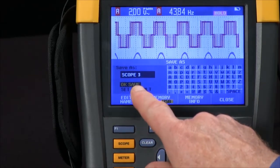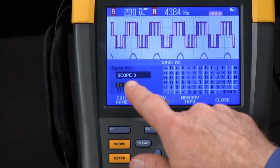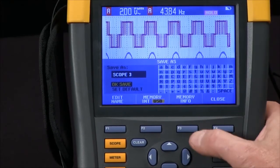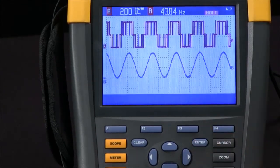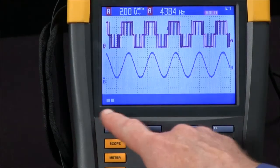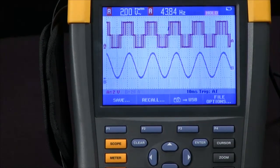We can create a name if we want to using the alphanumeric keypad over here, or just save as scope 3. I'll hit the Enter key for that. So now we're saving that data to my jump drive.